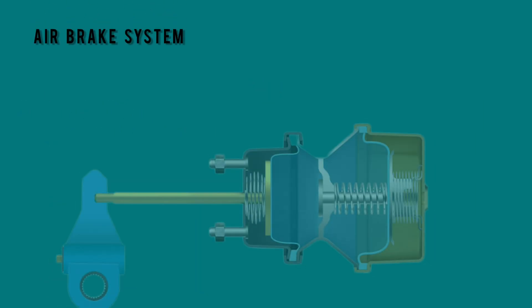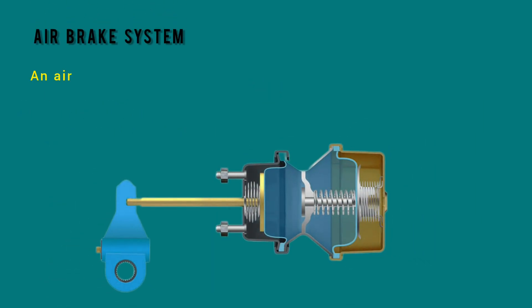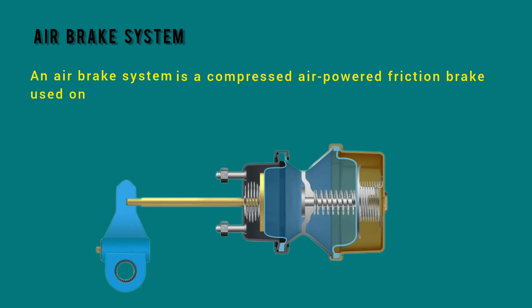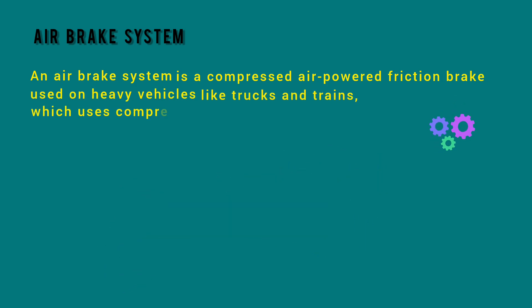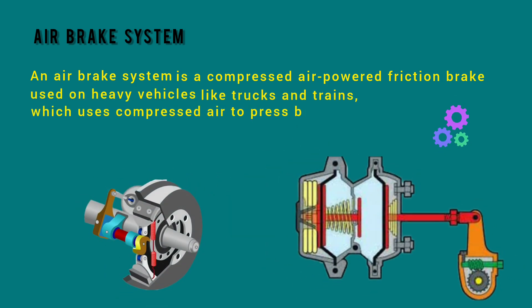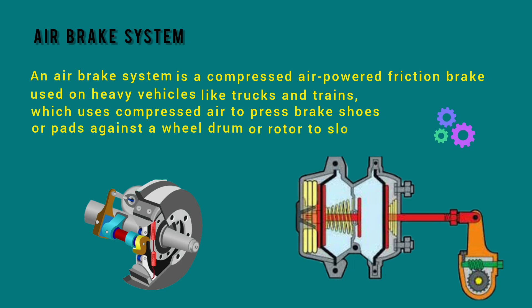Air Brake System. An air brake system is a compressed air-powered friction brake used on heavy vehicles like trucks and trains, which uses compressed air to press brake shoes or pads against a wheel drum or rotor to slow the vehicle.